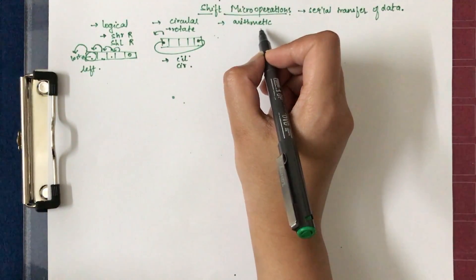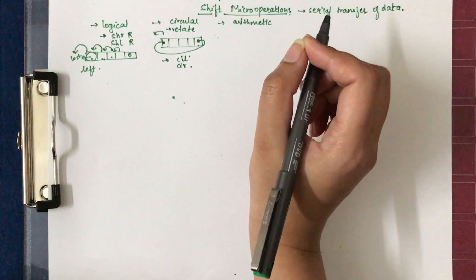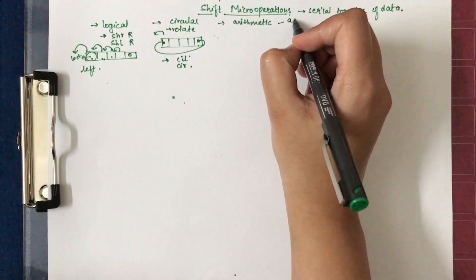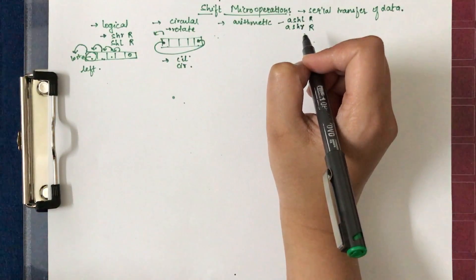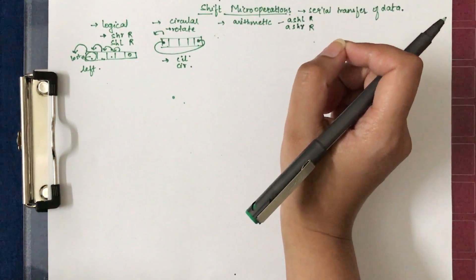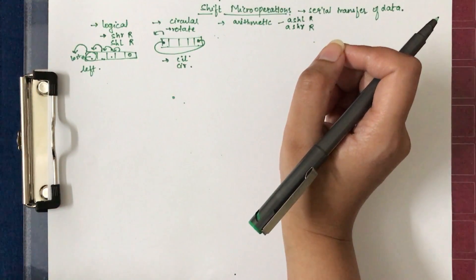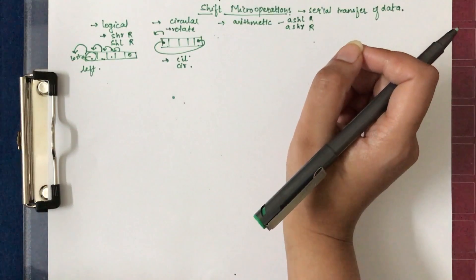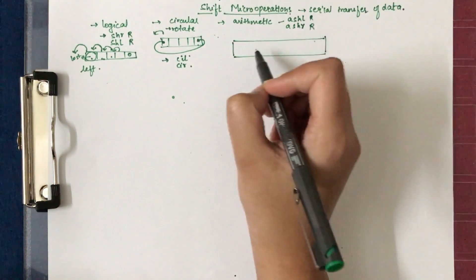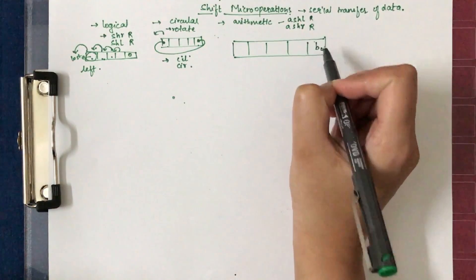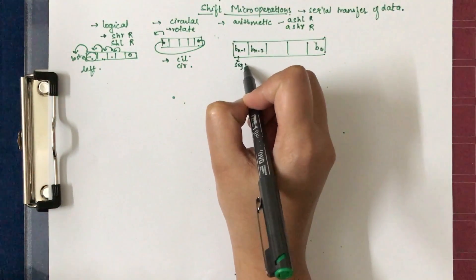The last type is arithmetic shift micro-operations, which shifts a signed binary number to the left or right. It is represented as ASHR with the register to be shifted. In this case, we also consider the sign bit, because the arithmetic shift requires that the sign bit remains unchanged. As you know, 0 is the sign bit for a positive number and 1 for a negative number. Consider a register with bits b0, bn-1, bn-2, and the sign bit.